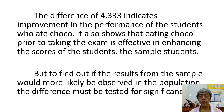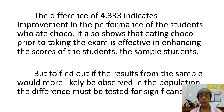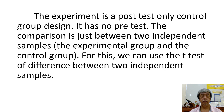There is a difference of 4.333. This difference indicates improvement in the performance of the students who ate chocolate, and shows that eating chocolate prior to taking the exam is effective in enhancing the scores of the sample students. But to find out if the results from the sample would more likely be observed in the population, the difference must be tested for significance. The experiment is a post-test only control group design — it has no pretest, and the comparison is just between two independent samples.